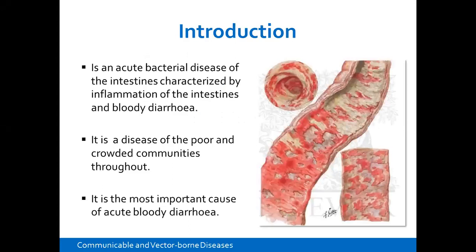To start us off, we're going to look at what Shigellosis is by definition. It's basically an acute bacterial disease of the intestines, normally characterized by inflammation of the intestines and ultimately bloody diarrhea. It is normally termed as a disease of the poor and crowded communities, even though nowadays things are changing. It is the most important cause of acute bloody diarrhea.